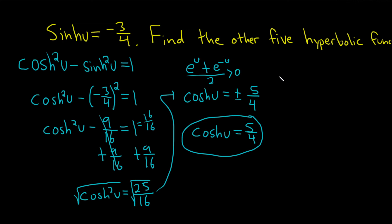Now we just got to find the other ones. So let's find, for example, the hyperbolic tangent. So tanh(u), that's just sinh over cosh. So you take negative 3/4, that's the sinh, divided by cosh, so 5/4. Just sinh over cosh, right? Sinh, which is negative 3/4, over cosh, which is 5/4.